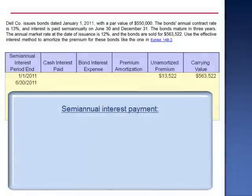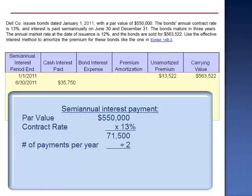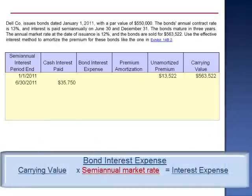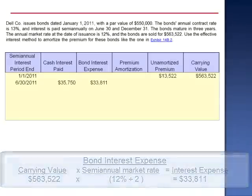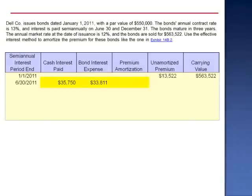The amount of interest paid every 6 months is equal to $550,000 multiplied by the contract rate, 13%, divided by 2. So $35,750 in interest is paid every 6 months. Bond interest expense is a constant rate equal to the semi-annual market rate on the date of issuance: $563,522 multiplied by 6% is $33,811. The difference between the cash interest paid and the interest expense is the dollar amount of the premium amortization, $1,939.